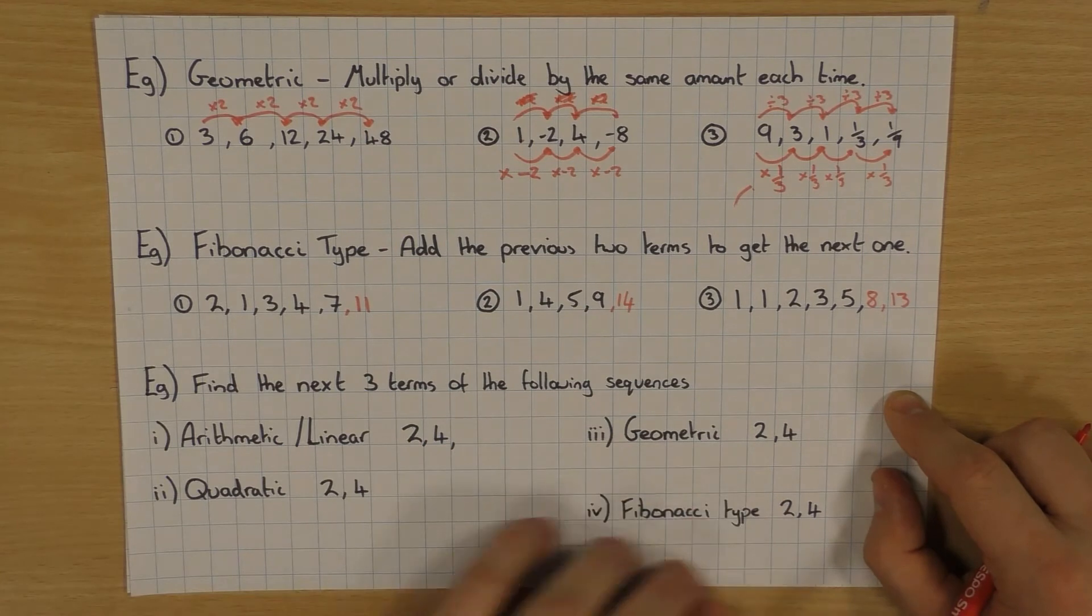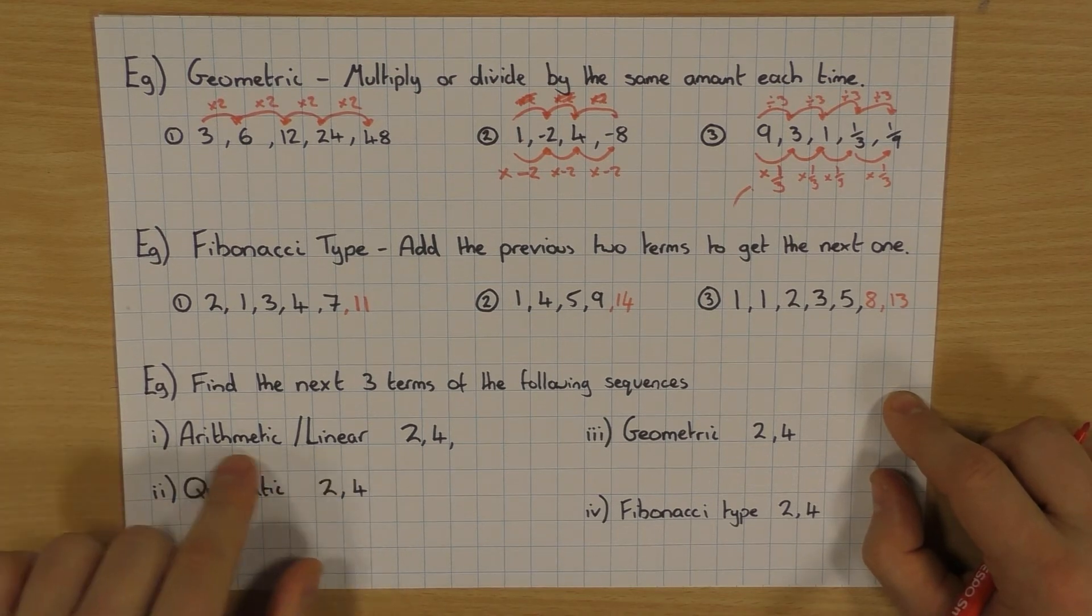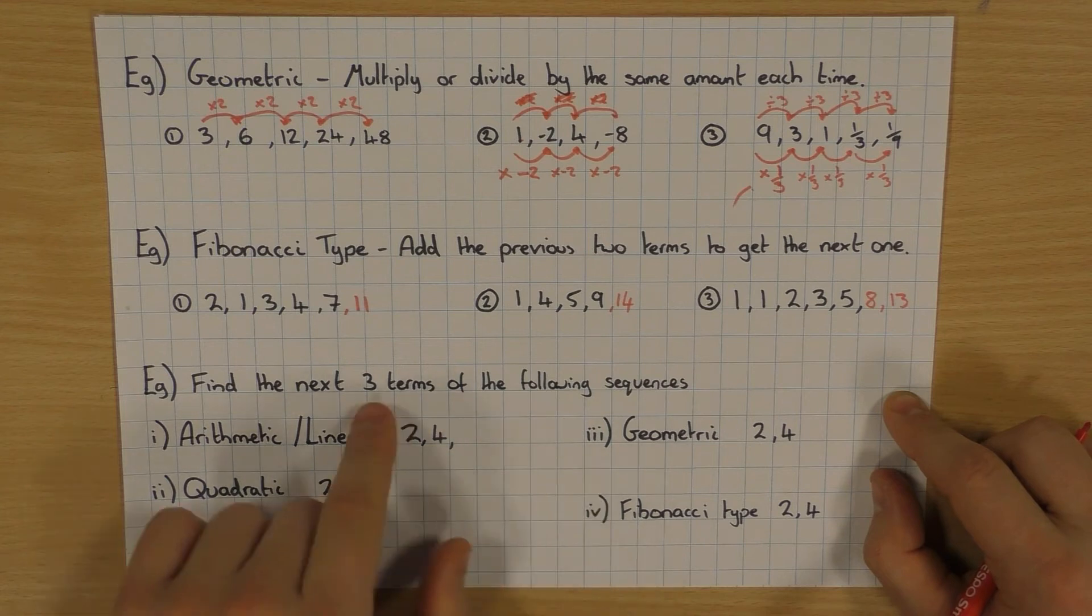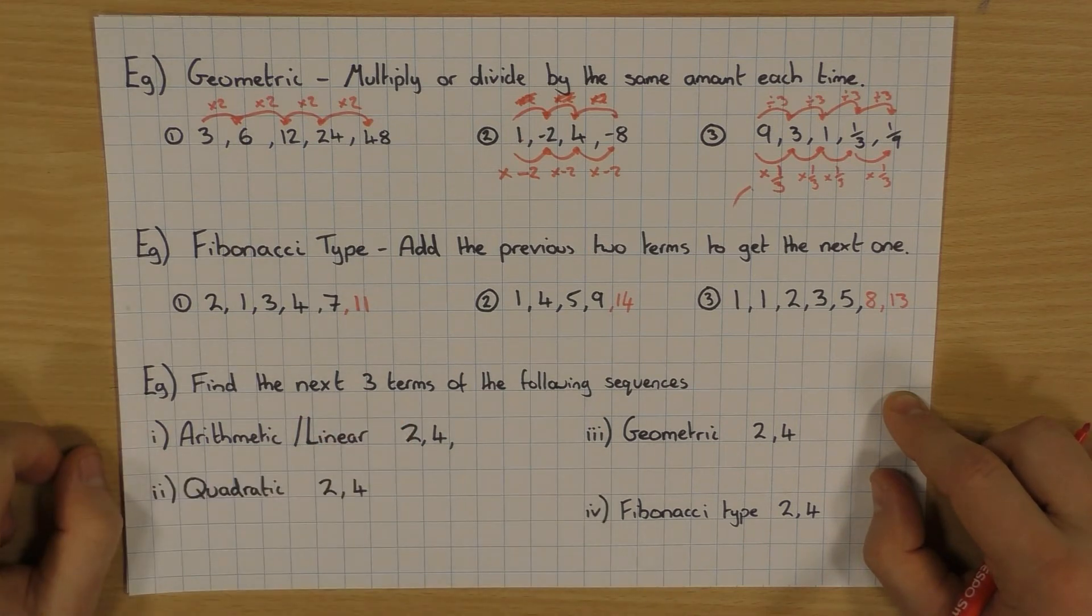A question that could come up is something very similar to this. This is in some of the textbooks. And similar questions have come up before, where it tells you what type of sequence they want you to do. And they give you the first two terms. And then you've got to work out the next couple. In this particular case, we're going for three terms.